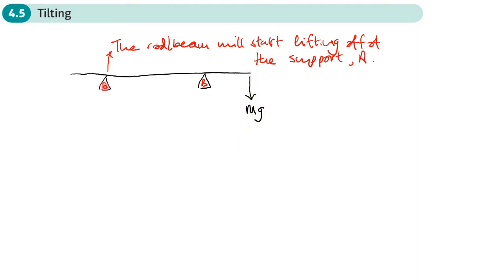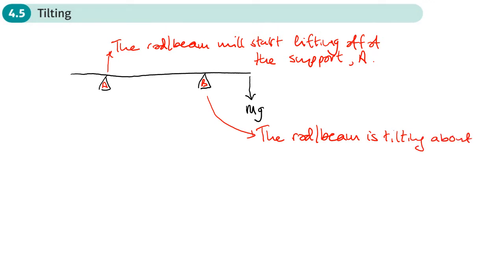If you apply a weight down here, this side is going to want to go down and it's going to start lifting up off of there. The way we describe it is: the beam or rod is tilting about B. B is the pivot point — it's pivoting around there. The rod or beam is tilting about B, and B just tells you the point where it's pivoting. The point where it's actually lifting off the support is at A.